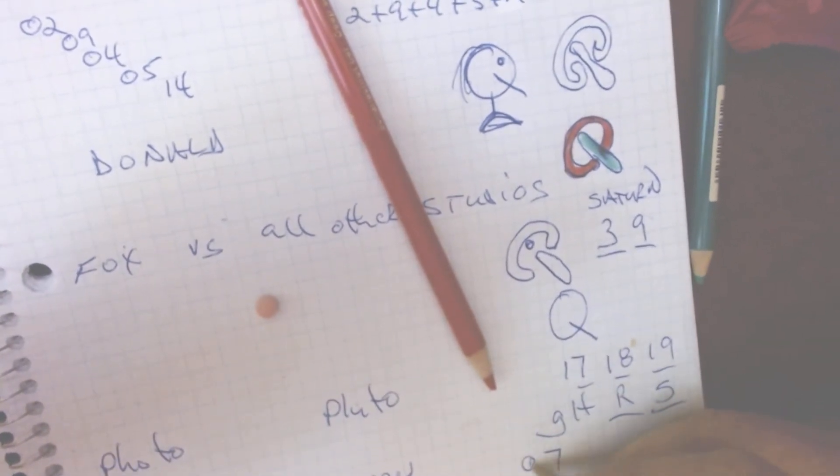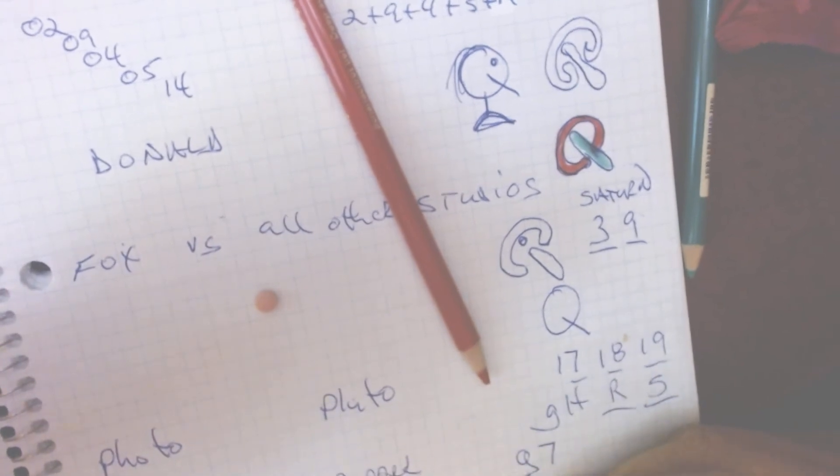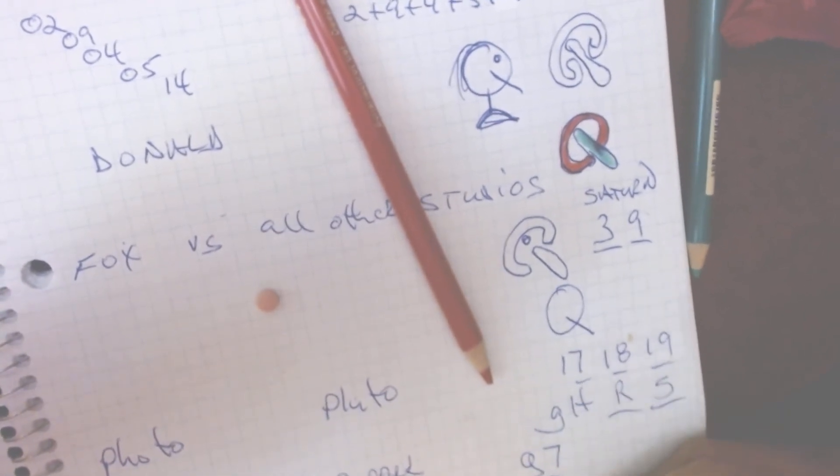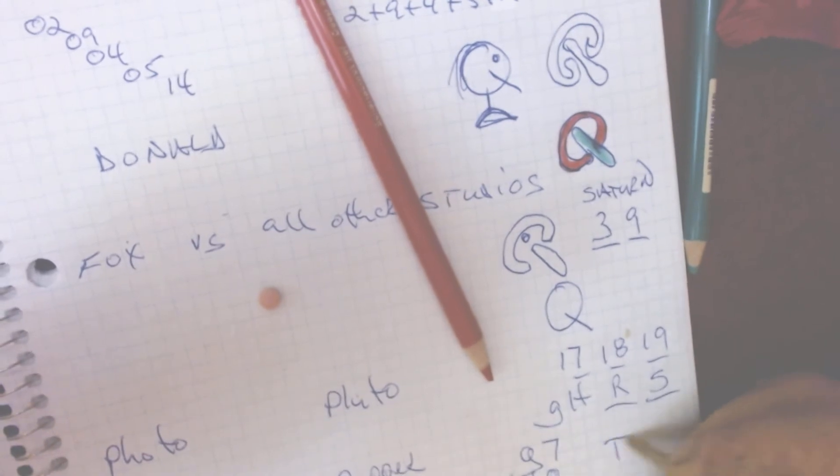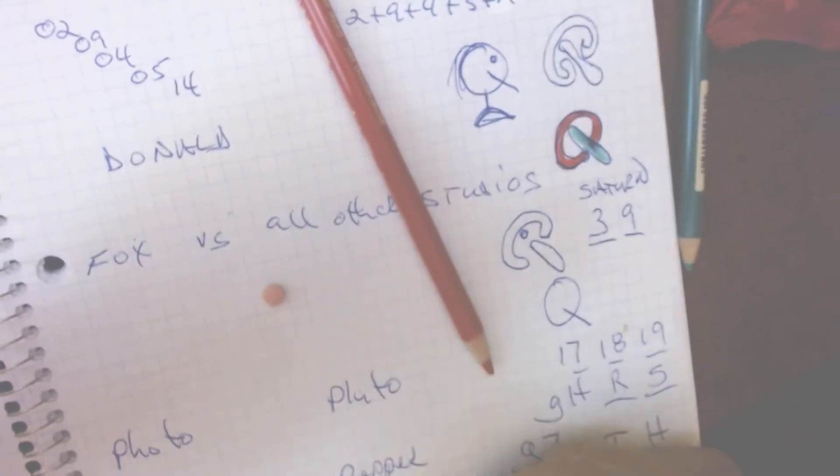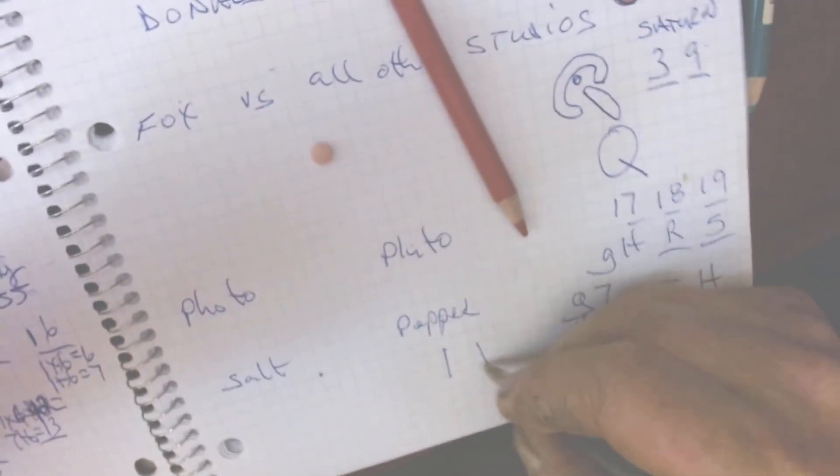One times seven is G. One plus seven is H. And once you get that, your H comes with your I. Your H and your I which creates the Union Jack.